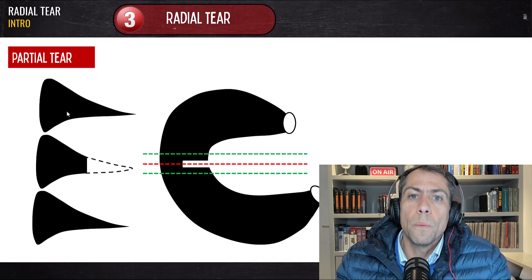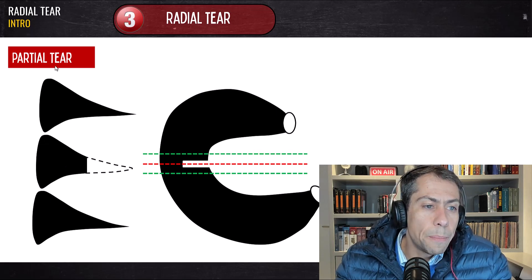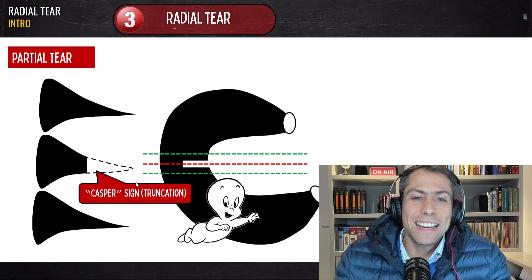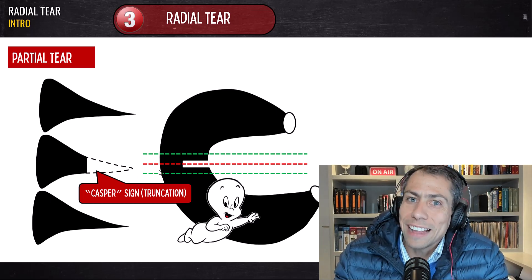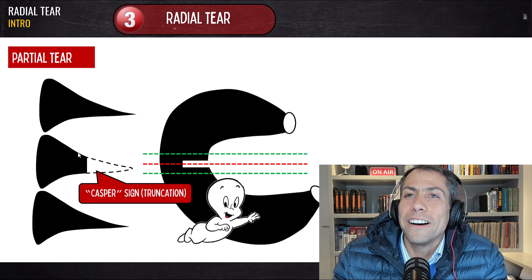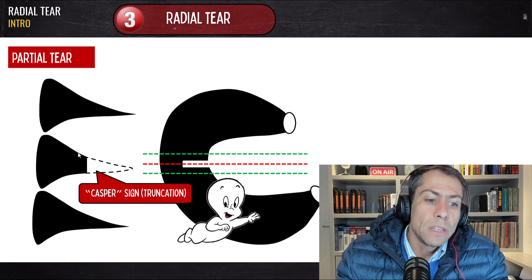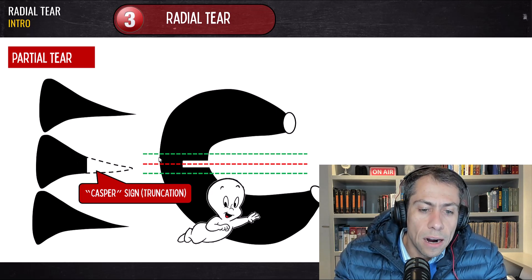One slice after that we will see the meniscus again. That is the difference between complete radial tears — where we have the ghost sign and the meniscus doesn't appear in one cut — and the partial tear, where just a portion of the meniscus doesn't appear. This is the truncation of the meniscus. I also like to call this the Casper sign, because it's like a little ghost — a partial ghost sign. But the more scientific name for our report is the truncation of the meniscus.